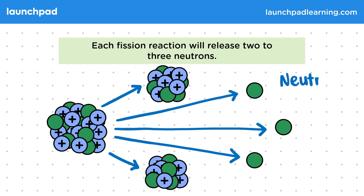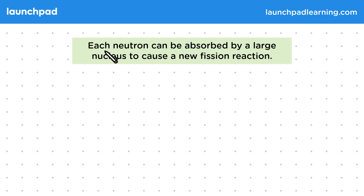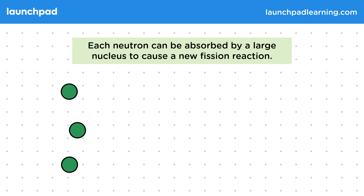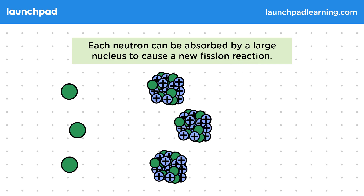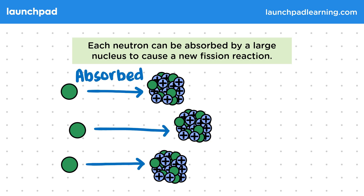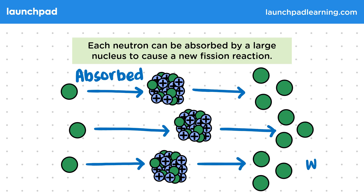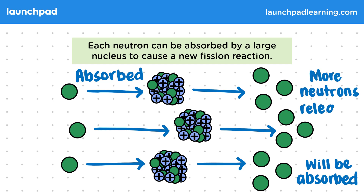But how do these neutrons cause the chain reaction? Each neutron can be absorbed by a large nucleus to cause a new fission reaction. Remember that fission reactions start when a slow-moving neutron is absorbed. Each of these reactions will then go on to release two to three neutrons.